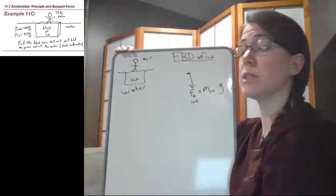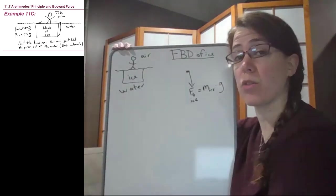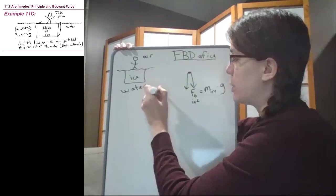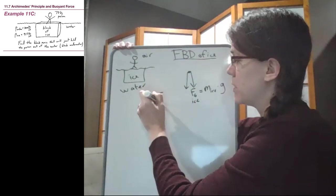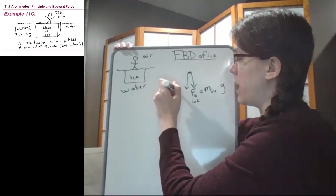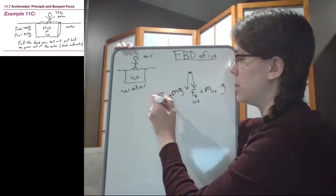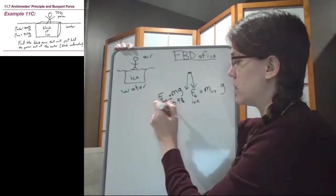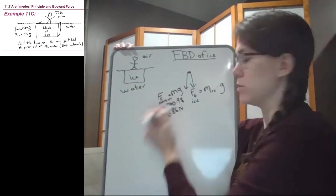And we have the person's entire weight pushing down on the ice. So we also have the weight of the person. So Fg person here is the mass that we were given times g, and so it's 70 times 9.8, and so we get 686 newtons.